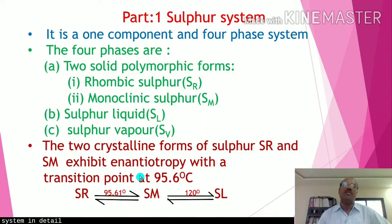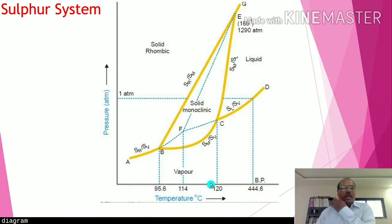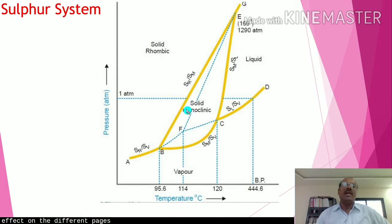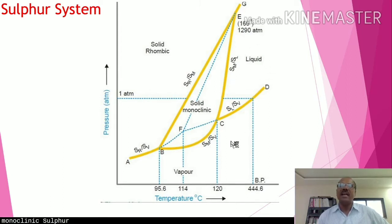The sulfur system is studied in detail with the help of a phase diagram, also called the PT diagram, because pressure and temperature show the effect on different phases. This phase diagram is divided into four regions: solid rhombic, solid monoclinic, liquid sulfur, and sulfur vapor.